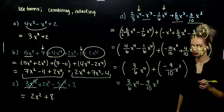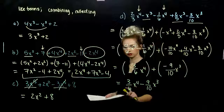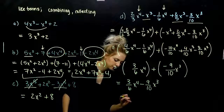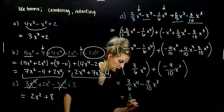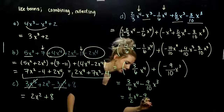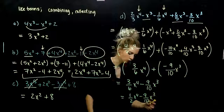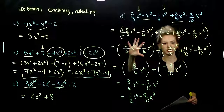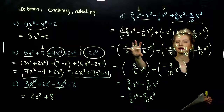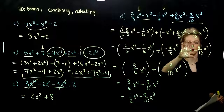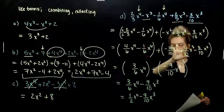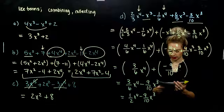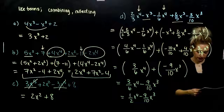Last check: can we simplify anything? Yes — that first term. Three goes into six twice, so three-sixths simplifies to one-half. We're looking at one-half x to the fourth minus nine-tenths x cubed. Be careful when dealing with fractions — write out every single step. Combine with common denominators only the things that are like; we can't combine those two final terms.